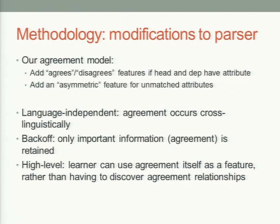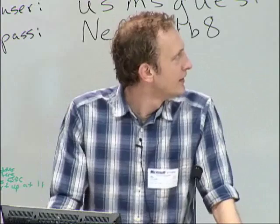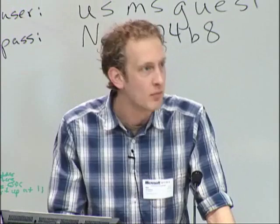Here's a summary of our agreement model. We look at two tokens and add an agreement or disagreement feature if the head and the dependent are both marked for the same attribute. For example, if a noun and a verb are both marked third person, we generate a feature saying this noun and verb agree for person and they are related. In cases where an attribute is not matched on the other token, we add an asymmetric feature.